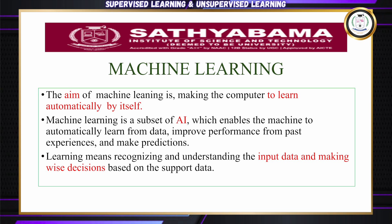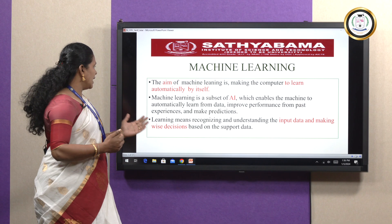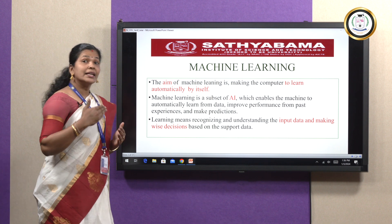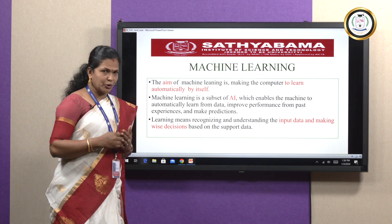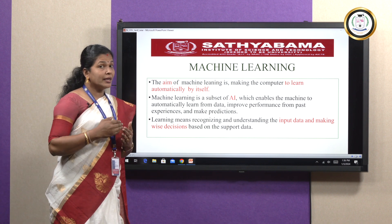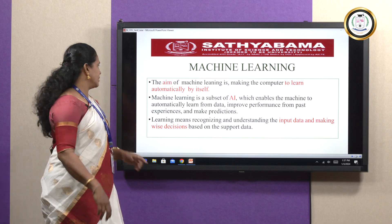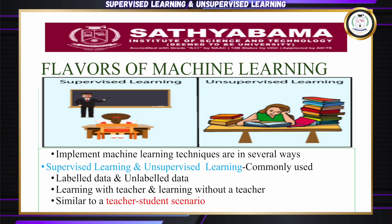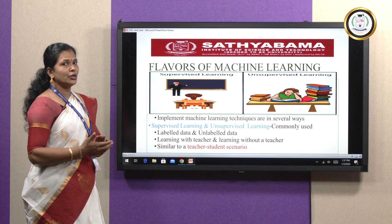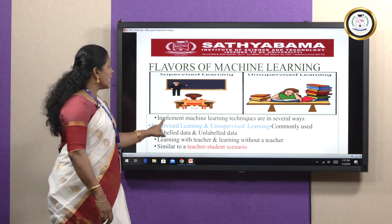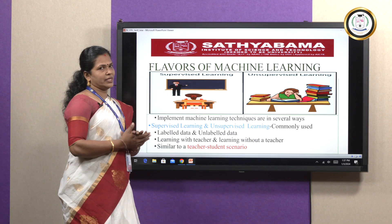First of all, we need to understand what learning is. Learning means recognizing and understanding the input data and making decisions based on the support data. Types of machine learning: machine learning techniques can be implemented in several ways. The most commonly used ones are supervised learning and unsupervised learning.